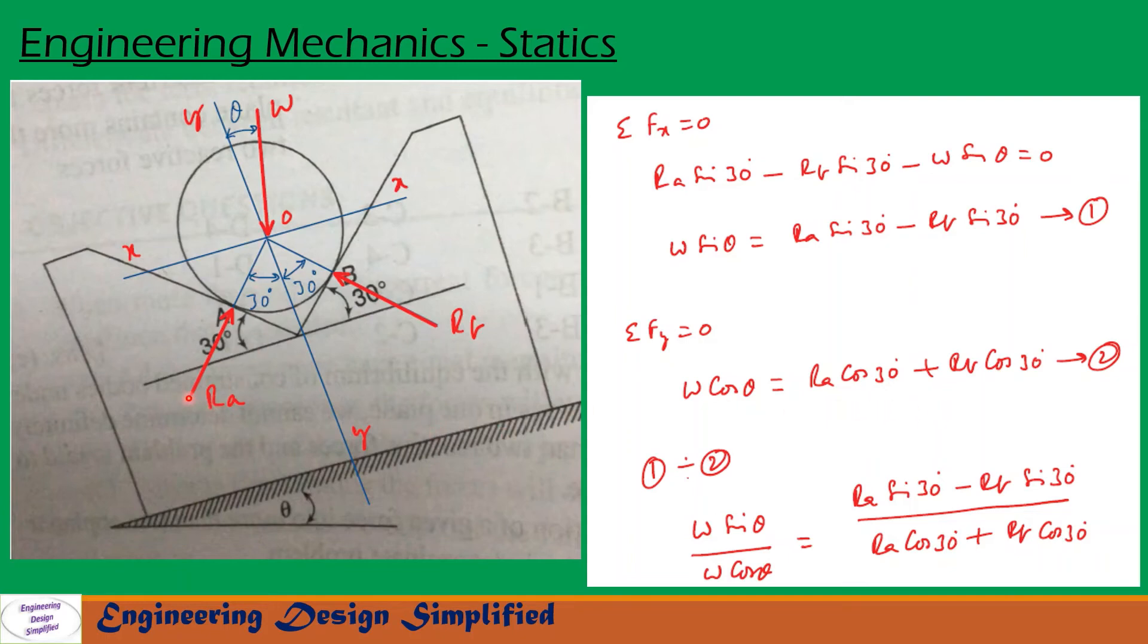The component of Ra along YY will be Ra cos 30. Similarly, component of Rb along YY will be Rb cos 30. That is written here. W cos theta equal to Ra cos 30 plus Rb cos 30. Let us call that equation 2.